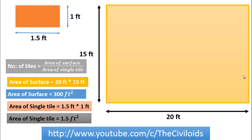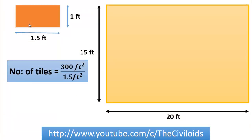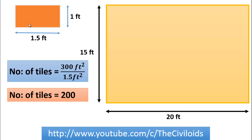Remember that both units should be consistent. It means that if you are using feet for calculating the area of the surface, then also use feet for calculating the area of the tile. Now, by putting values in this equation, we will get number of tiles equal to 300 square feet divided by 1.5 square feet. After calculation, we will get the number of tiles is 200 tiles.